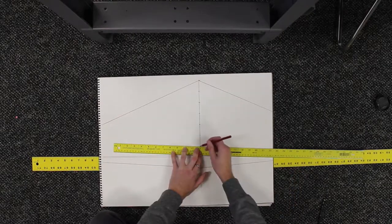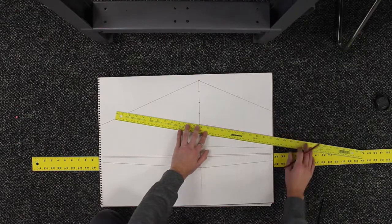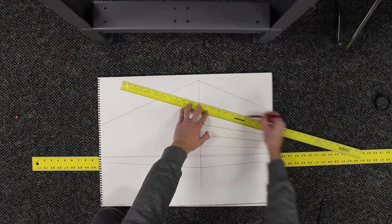I'm just going to carry each of those out to the vanishing point and create the beginning of a gridded structure that I can just follow to finish out my drawing.